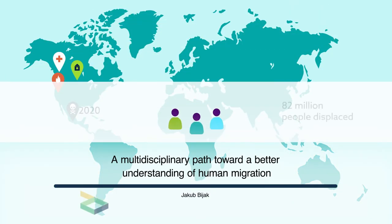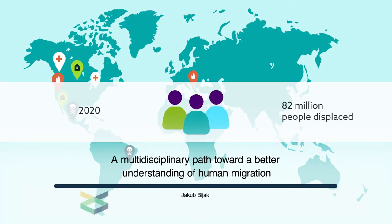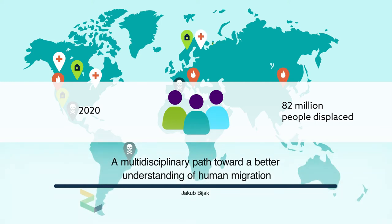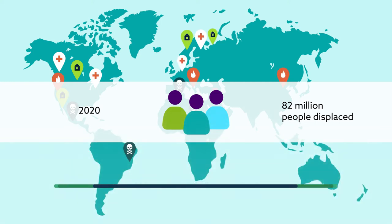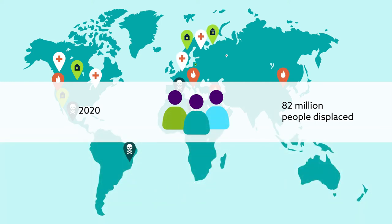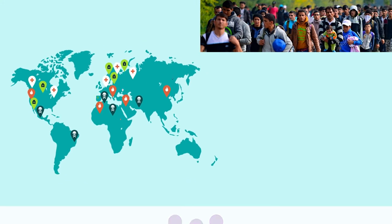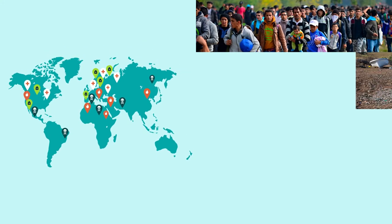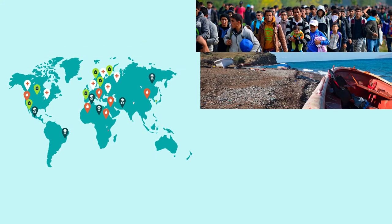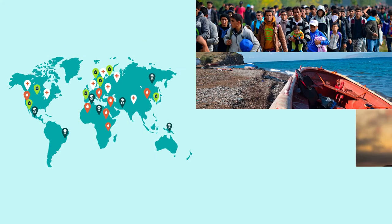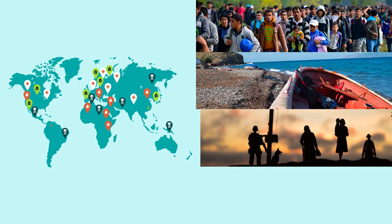At the end of 2020, over 82 million people worldwide were forcibly displaced from their homes, nearly half of them children. Many people and families who are forced to flee must often undertake perilous journeys to reach safety and asylum.